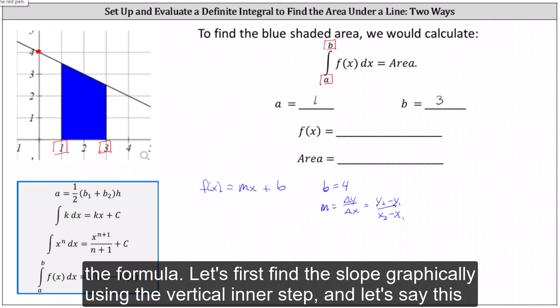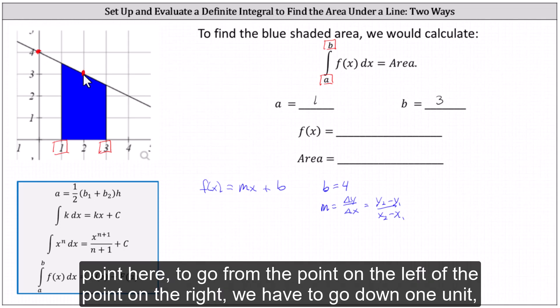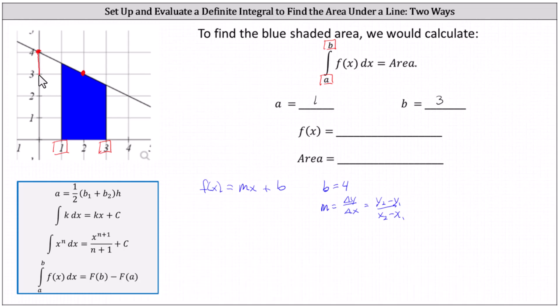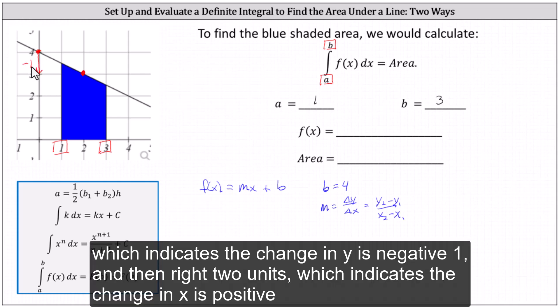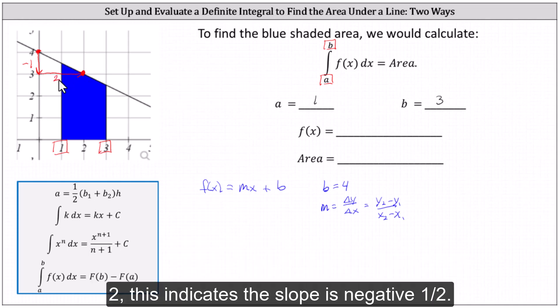Let's first find the slope graphically, using the vertical intercept and this point here. To go from the point on the left to the point on the right, we have to go down one unit, which indicates the change in y is negative one, and then right two units, which indicates the change in x is positive two. This indicates the slope is negative one-half.